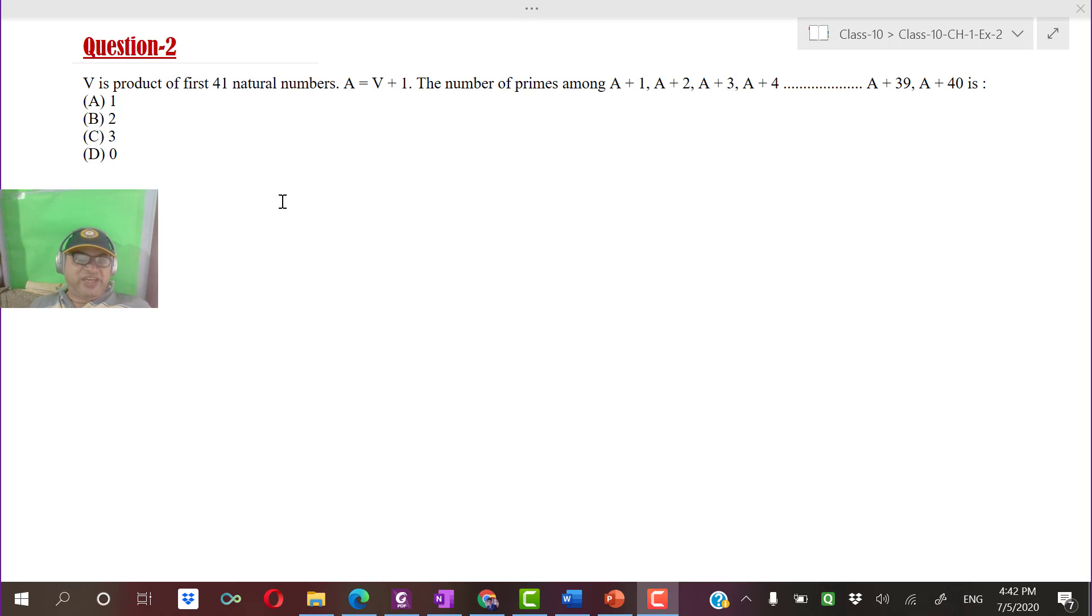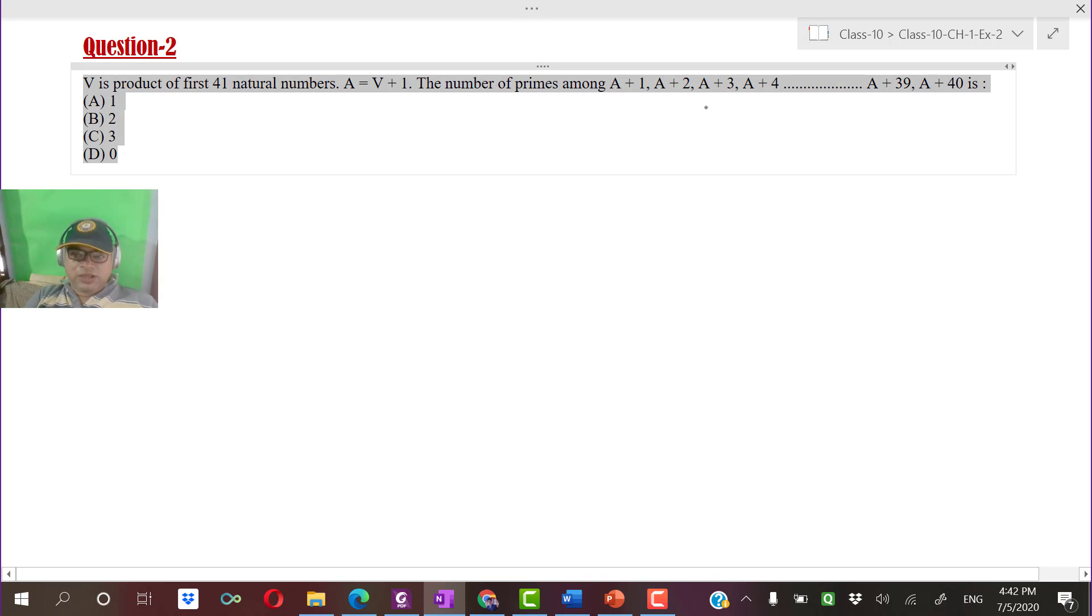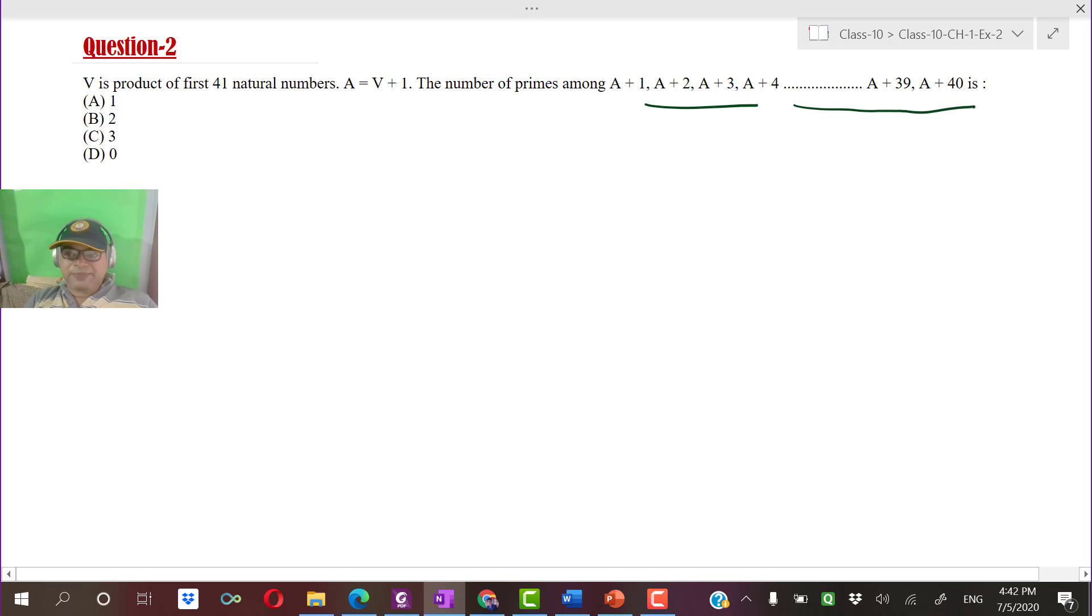Question number 2. V is the product of the first 41 natural numbers, and A equals V plus 1. I have to find which of the following numbers are prime: A plus 1, A plus 2, A plus 3, A plus 4, and so on up to A plus 40.